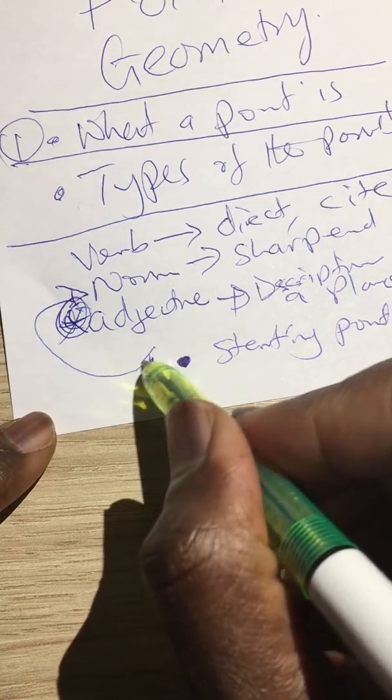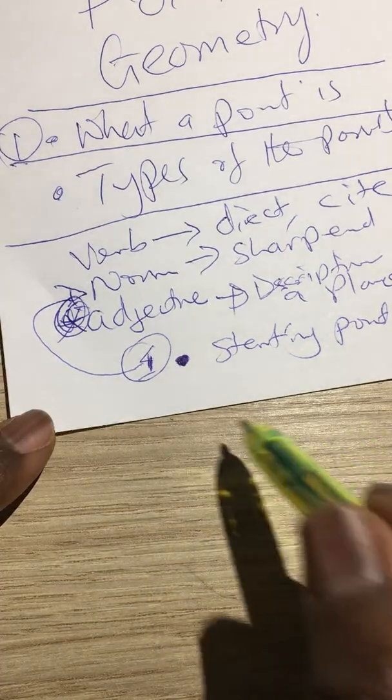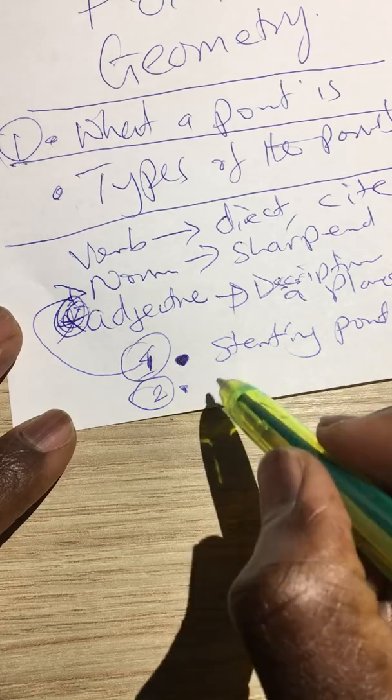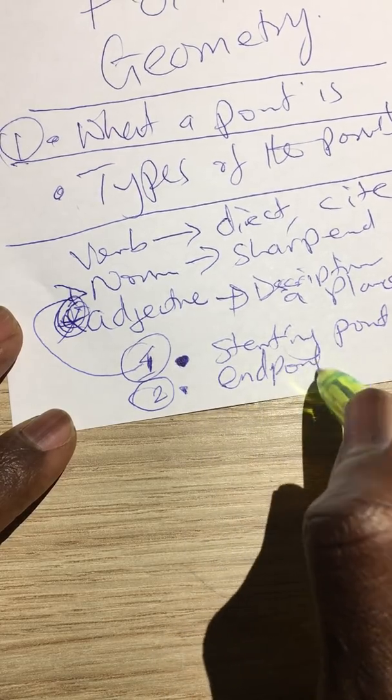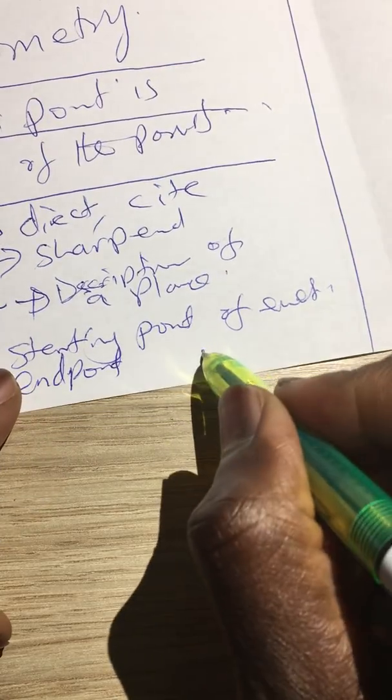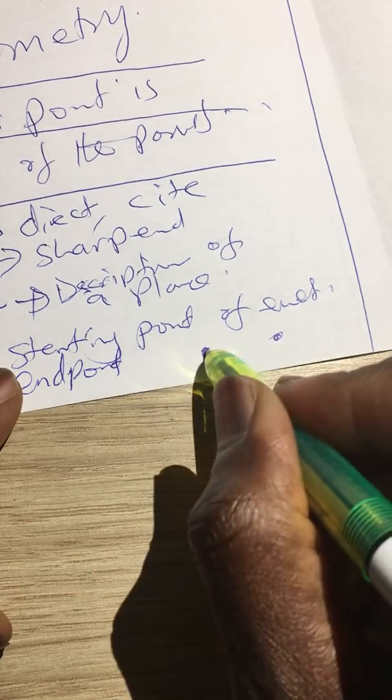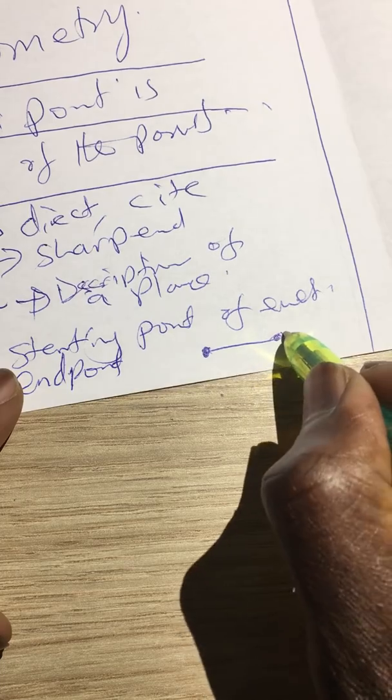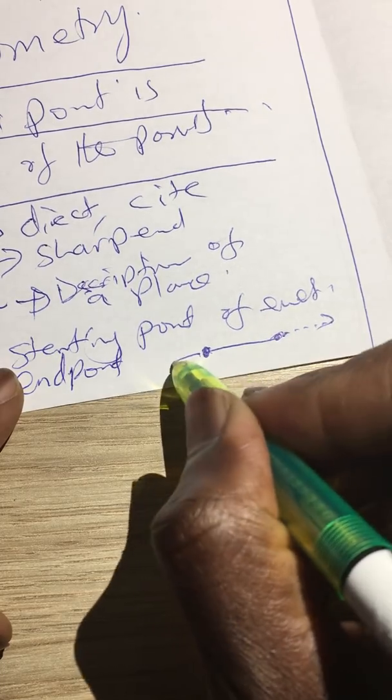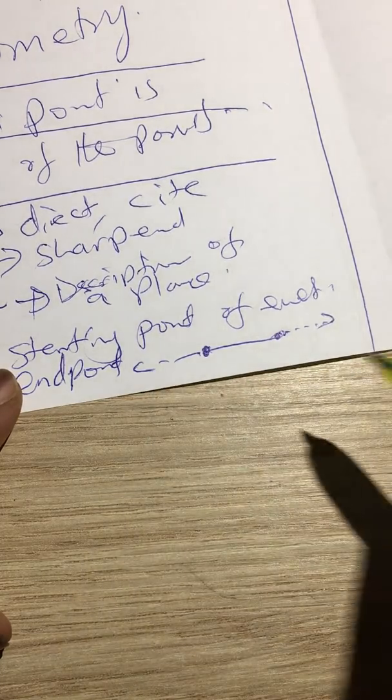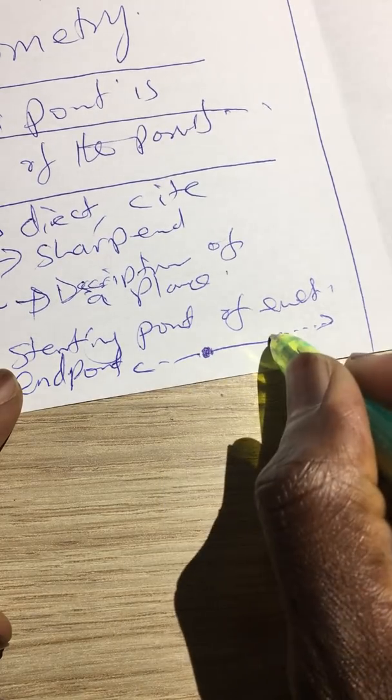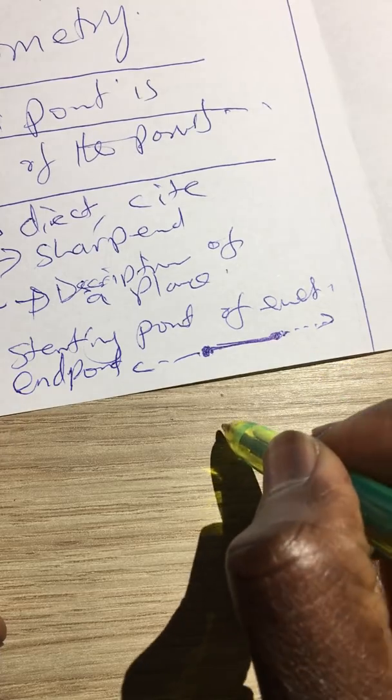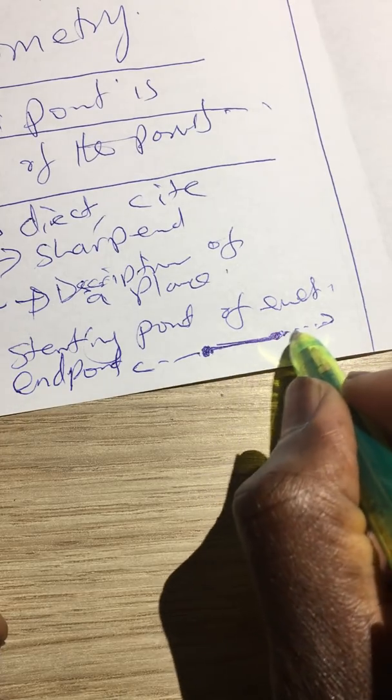The second type of point that you may look at is the endpoint. For example, if we join two points together, we form a line segment, and we know geometry tells us that a line segment can be extended in either direction infinitely. So if we have two points there, we can have what is known as the endpoints.